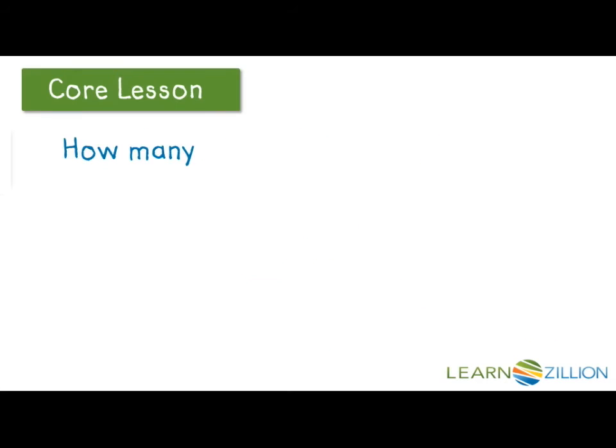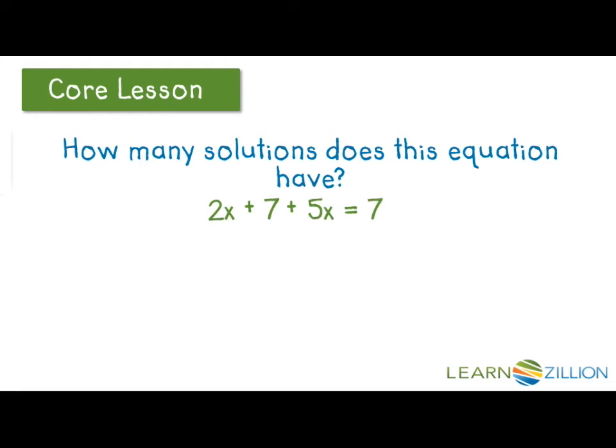How many solutions does this equation have? 2x plus 7 plus 5x is equal to 7 times the quantity x plus 8. I'm going to combine like terms on the left and use the distributive property of equality on the right.